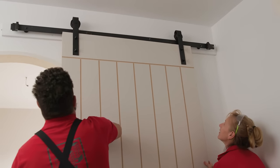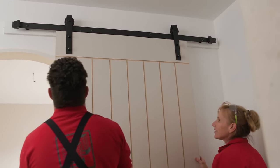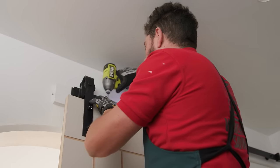Grab a friend and lift the door onto the track. Push the anti-jump locks into position and tighten the screws.